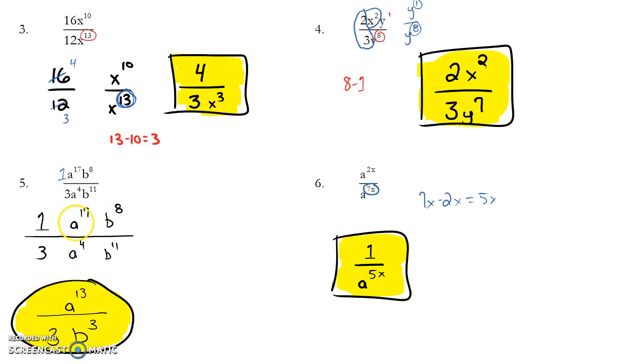Then I can vertically write my a terms. a to the 17th, a to the 4th. 17 is bigger, so a goes to the numerator. 17 minus 4 is 13. That's my exponent. My b terms are written vertically. 11 is bigger than 8, so b goes to the denominator. 11 minus 8 is 3. My exponent becomes 3.